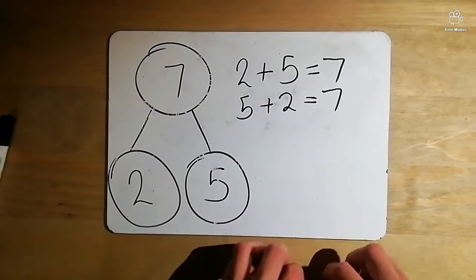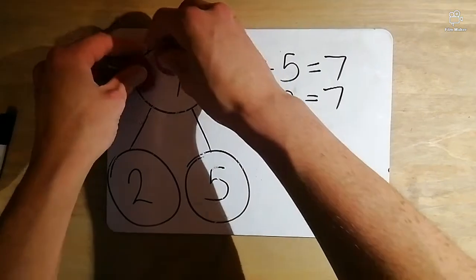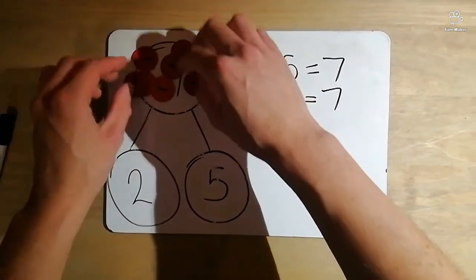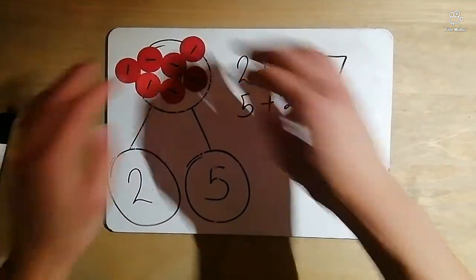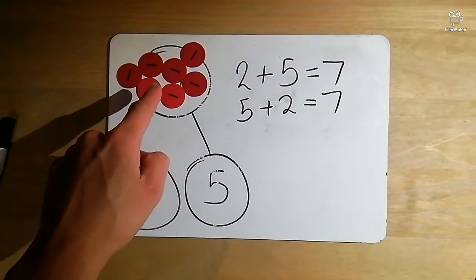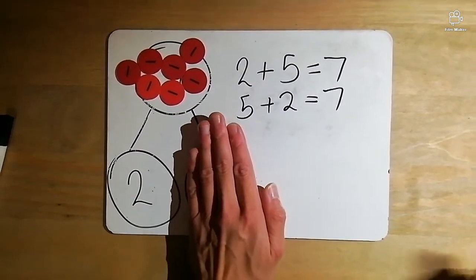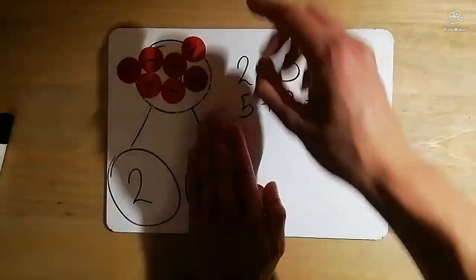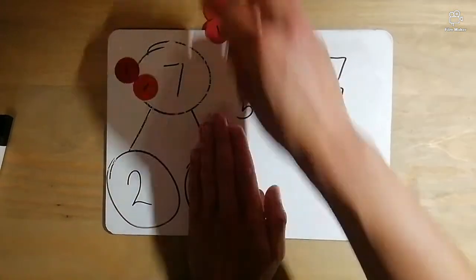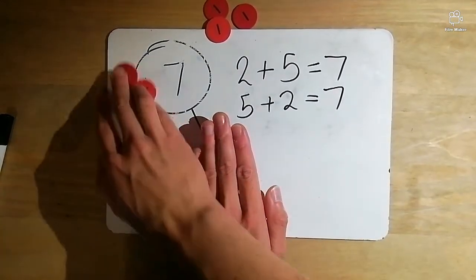Now this is where it gets a little bit trickier. If I have seven up here to begin with, if I take away five what am I left with? Well let's double check shall we? We're left with two.